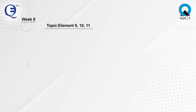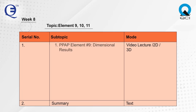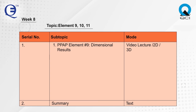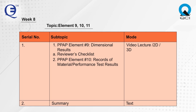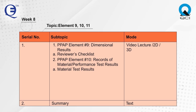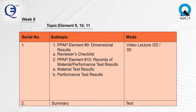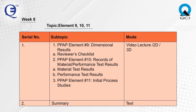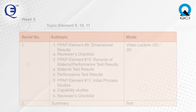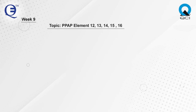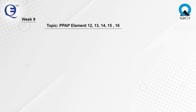Week 8 covers Elements 9, 10, and 11. PPAP Element 9 covers Dimensional Results and a reviewer's checklist. PPAP Element 10 covers Records of Material and Performance Test Results, including material test results and performance test results. PPAP Element 11 covers Initial Process Studies and capability studies, along with a reviewer's checklist.